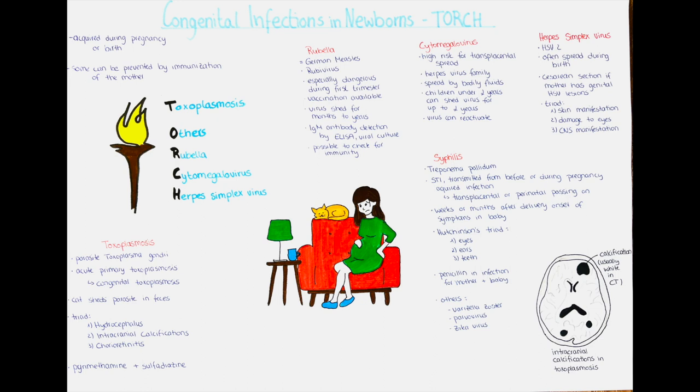Unfortunately, there is no available vaccine currently to prevent congenital cytomegalovirus infection. The complications for the infant can include developmental defects like sensorineural hearing loss, cognitive problems, vision loss, seizures, and more. It is very individual how the baby will be affected.